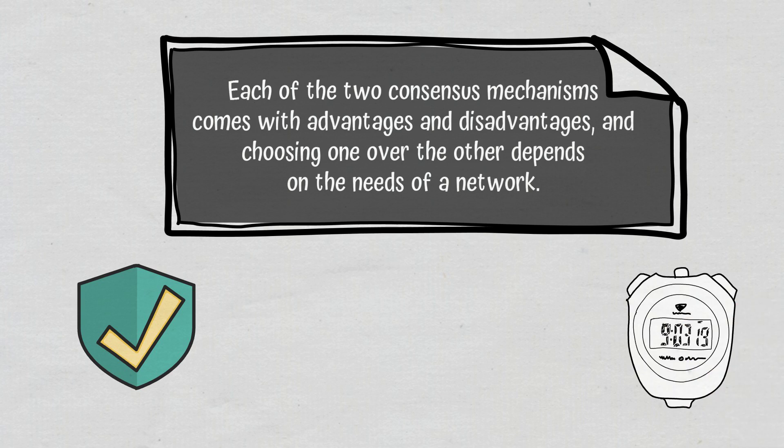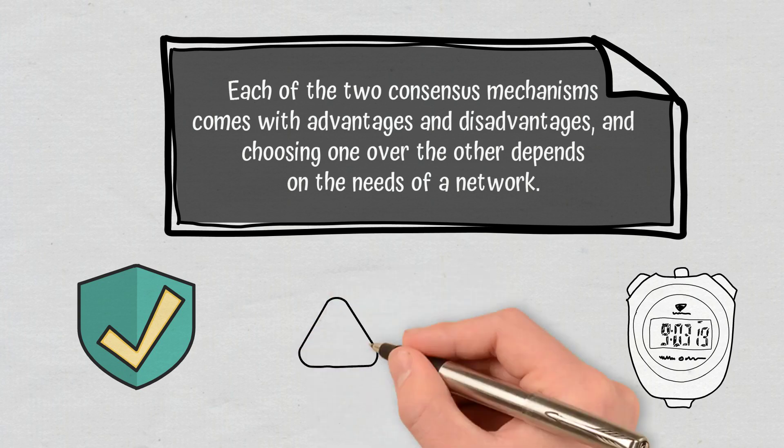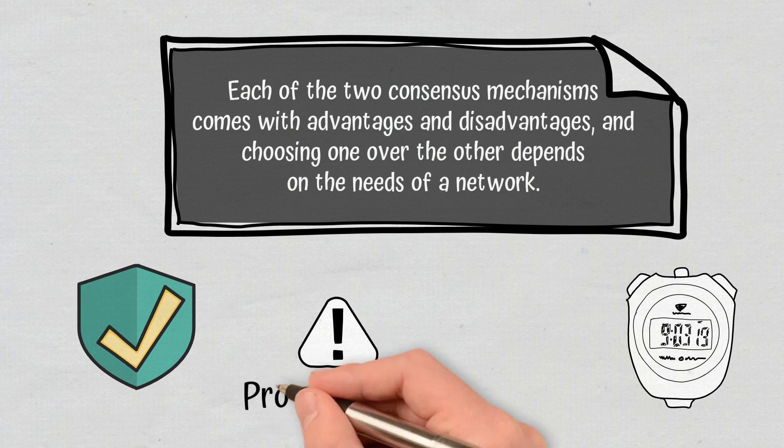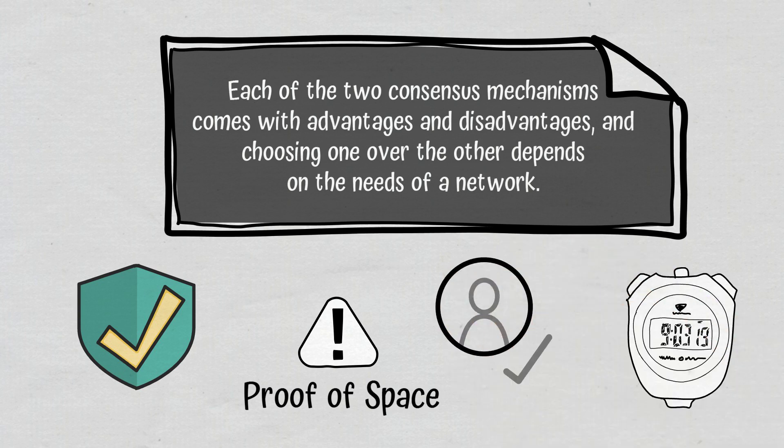Still, both consensus mechanisms are vulnerable to attacks. That's why in order to validate transactions safely, another validation mechanism, called Proof-of-Space, is currently being created. What's more, they both pose some centralization issues, despite the fact that Proof-of-Stake is seen as the mechanism least likely to lead to centralization.